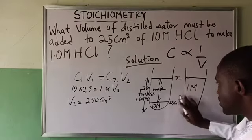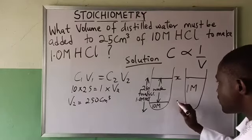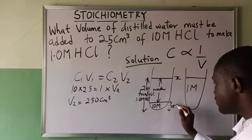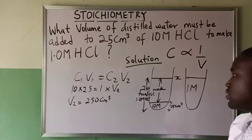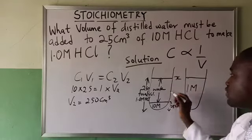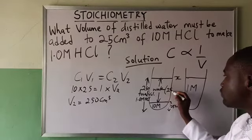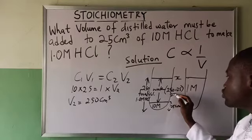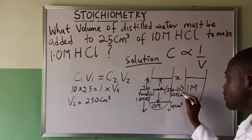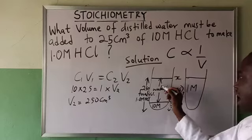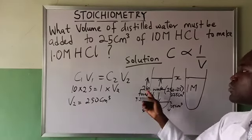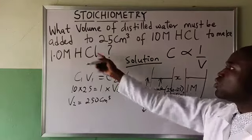But what is the volume of the concentrated acid? That's 25 cm³. That is from here to here, so here to here is 25 cm³. Then this one, what will it give you? It will give you 250 minus 25, that will be 225 cm³. That will be the volume of water I am to add to make it to the 250 cm³ so that it will be equivalent to 1 molar HCl.